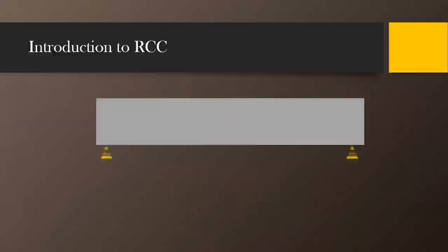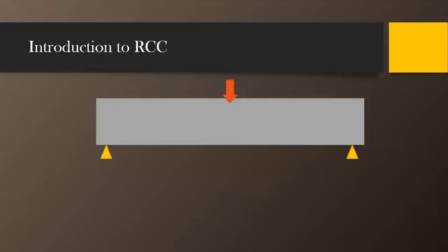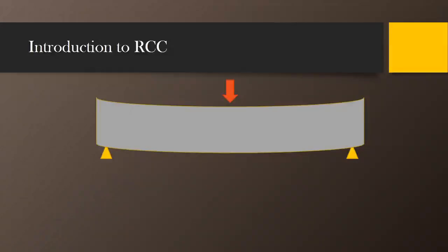To understand why, let us take one example. Consider a concrete beam which is simply supported, and suppose this beam is subjected to an external load in the form of a point load. When this load is applied on the beam, naturally the beam will get deformed.